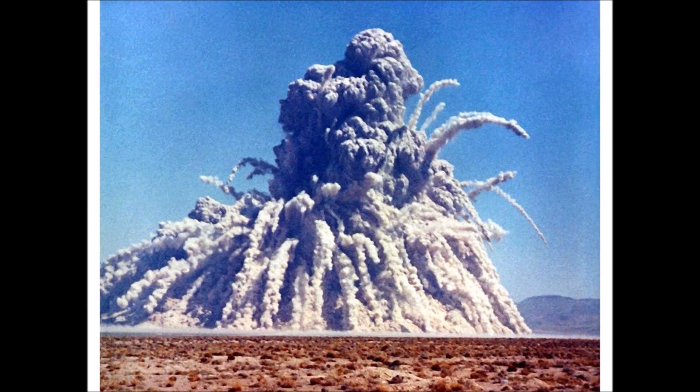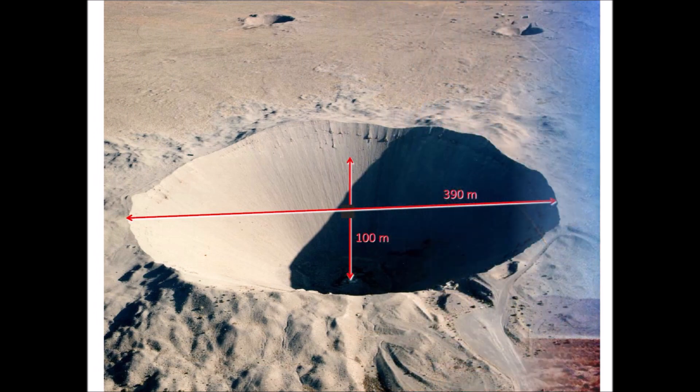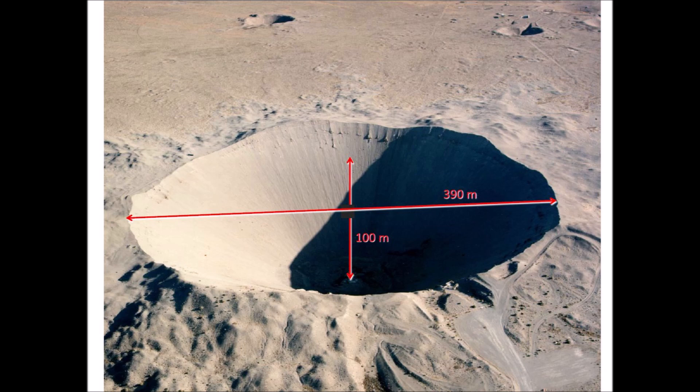The Sedan explosive device was lowered into a shaft drilled into the desert alluvium 194 meters (636 feet) deep. The blast had a yield equivalent to 104 kilotons of TNT and lifted a dome of Earth 90 meters (300 feet) above the desert floor before venting at three seconds after detonation. The blast exploded upward and outward, displacing more than 11 million tons of soil. The resulting Sedan crater is 100 meters (330 feet) deep with a diameter of about 390 meters (1,280 feet).